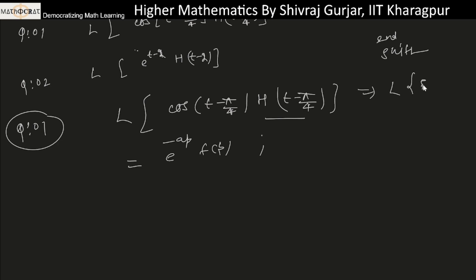Comparing Laplace of F(t-a) times H(t-a), we see a is π/4. F(t-a) is cos(t - π/4), so we can say that F(t) is nothing but cos(t). The Laplace of F(t) will be p divided by p² + 1. So a is π/4, giving e^(-π/4 p) times p/(p² + 1). This will be the answer.